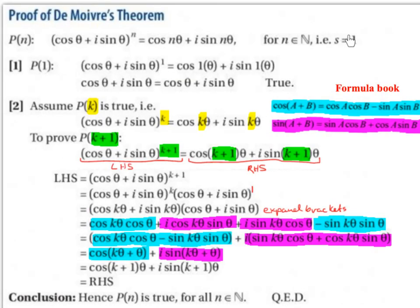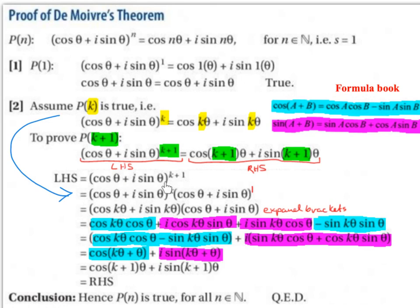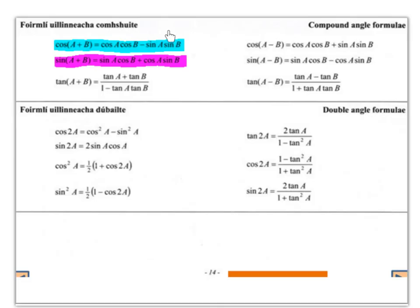Step 1: we substituted S = 1 and showed P(1) was true. Step 2: we assumed P(k) was true, then used that assumption to prove P(k+1) was also true. The key step where we used the assumption was substituting cos θ + i sin θ to the power of k = cos kθ + i sin kθ. The two compound angle formulas used in this proof come from page 14 of the formula book.